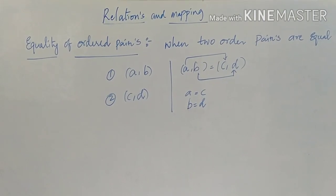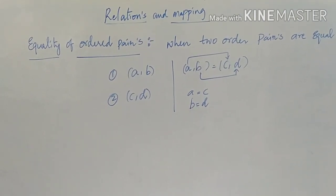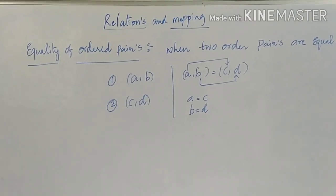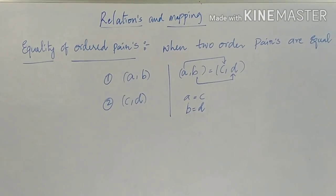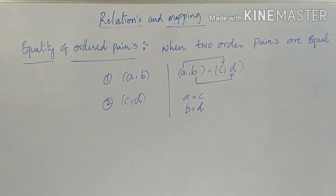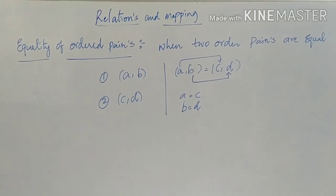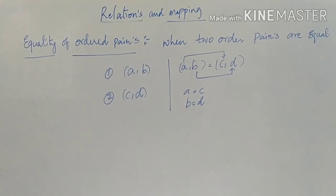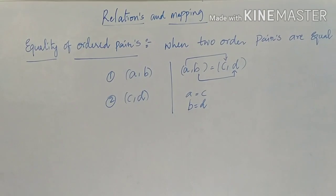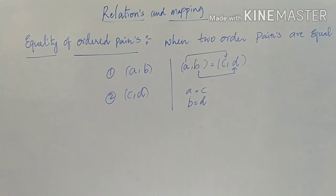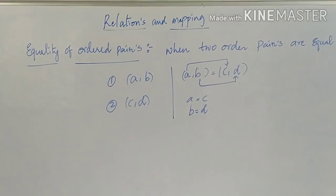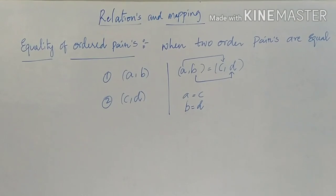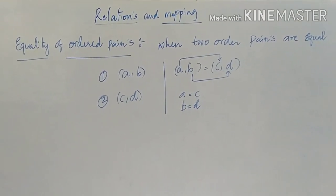Equality of ordered pairs: when are two ordered pairs equal? For pairs (A, B) and (C, D), the first component must equal the first component and the second component must equal the second component. That is, A = C and B = D. Such ordered pairs are called equal ordered pairs.